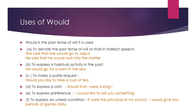'Would' is the past tense of 'will'. It is used in these conditions: first, to denote the past tense of 'will' or 'shall' in indirect speech — 'She said that she would go' or 'He said that he would look into the matter.' When 'said' is present, we change the reported speech verb into past, so 'will' becomes 'would'. Second, to express a habitual activity in the past — 'He would go for a swim.' Third, to make a polite request — 'Would you like to take a cup of tea?'